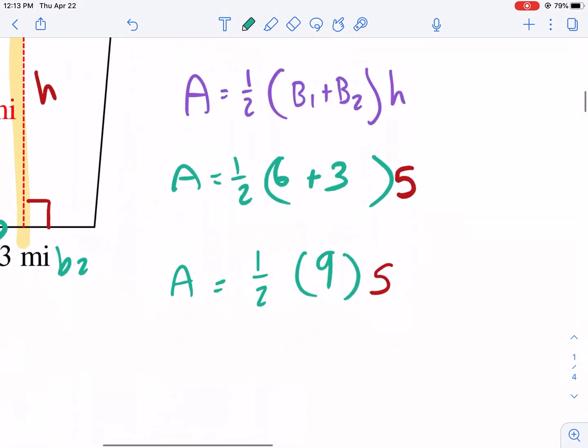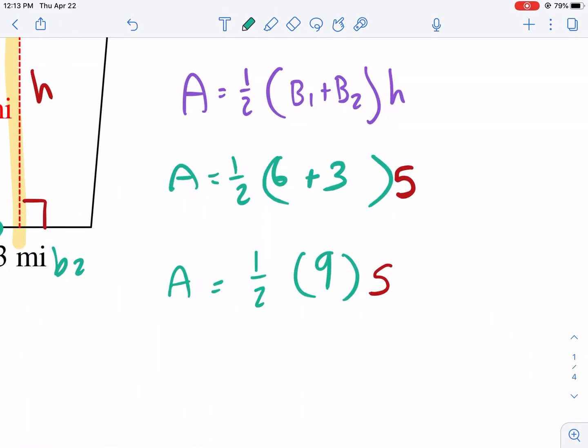Now, what I always like to do, this is just a strategy I like to employ, is I always try to see if I can multiply this 1 half times an even number first. So let's say this was a 6. I would multiply the 1 half times 6 and then multiply it by 9. If you can, you want to try to avoid decimals. In this case, we have two odd numbers, so it doesn't matter which way we proceed. So I'm just going to go straight across my calculator. 1 half times 9 times 5. And I'm going to get 22.5. So 22.5 miles squared.